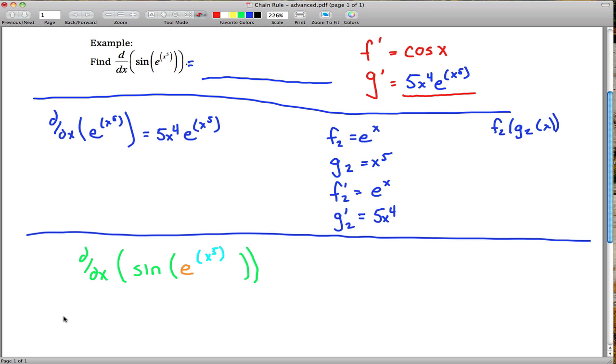And what we can do in taking the derivative is we can just peel away a layer at a time. Start from the outside. The outermost is the green here. The derivative of sine is cosine, cosine of, leave all this stuff alone. I guess I can just write it in green.